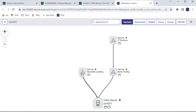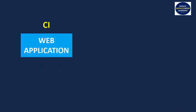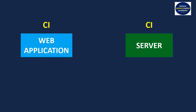Now let's talk about the main topic: affected CI and impacted CI. Let's assume we have a CI that is a web application and another CI that is a server. These two CIs have a relationship — the web application is hosted on the server CI. So if there is a change in the server CI, it may impact the functionality and availability of the web application CI.